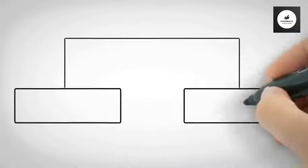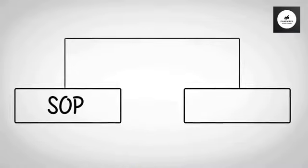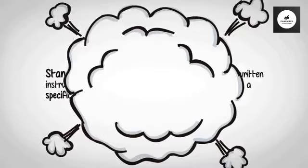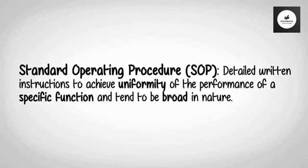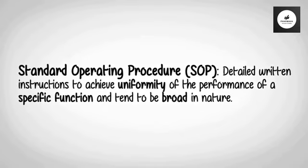Let us look at the difference between an SOP and a work instruction. Standard Operating Procedure (SOP): detailed written instructions to achieve uniformity of the performance of a specific function and tend to be broad in nature.